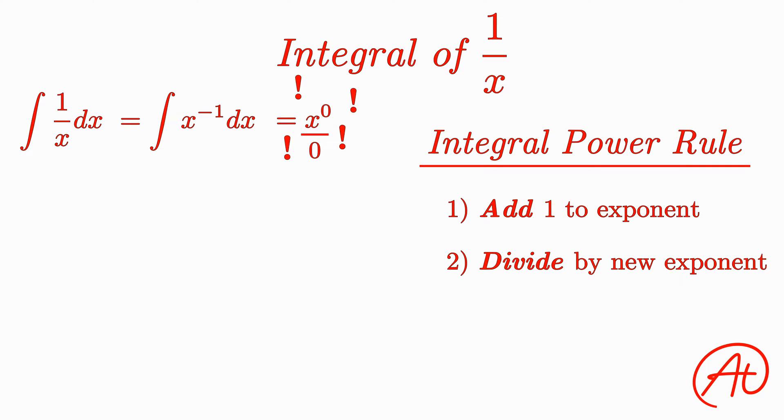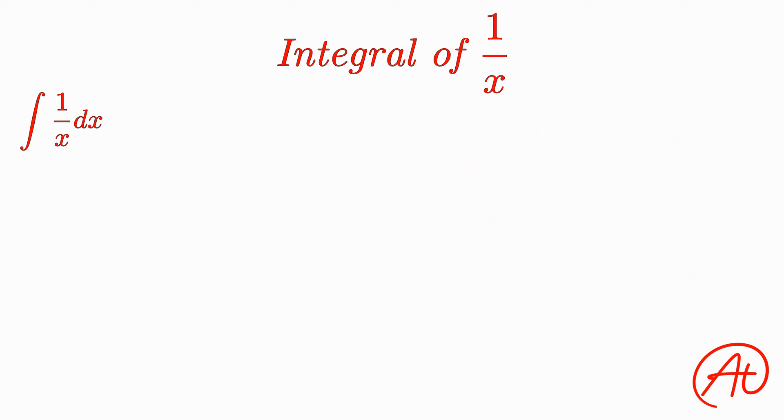It hurts even to put that on the screen. The integral power rule falls apart when the exponent is negative 1 because it causes us to have to divide by 0. Okay, let's get that off the screen before I'm sick.